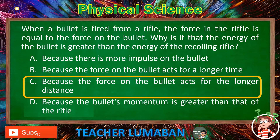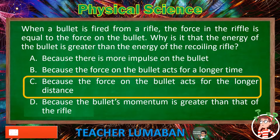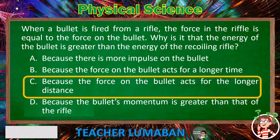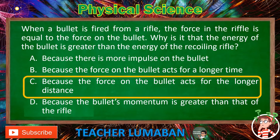The correct answer is letter C. When a bullet is fired from a rifle, the force on the rifle is equal to the force on the bullet. The energy of the bullet is greater than the energy of the recoiling rifle because the force on the bullet acts for the longer distance.